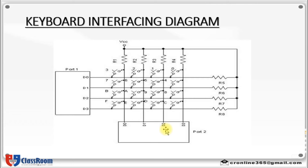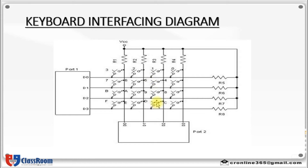Let us see how this key is detected by the microcontroller. First, it will ground row D0, then read all columns. If all column values are found to be high, it means the key pressed does not belong to that row. Then it will ground row D1 and read all columns. Since key 5 was pressed here, a key press is detected.